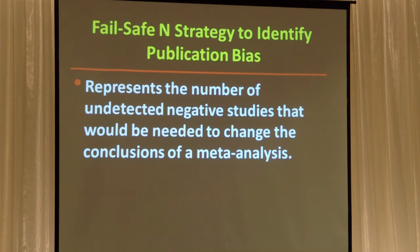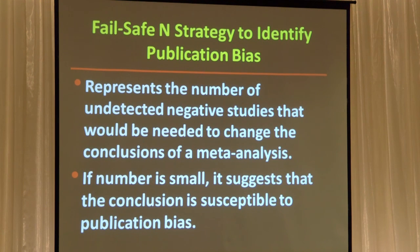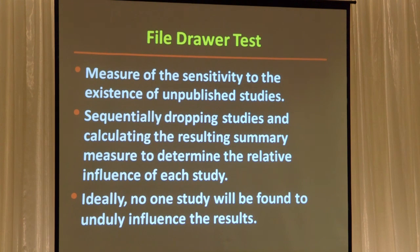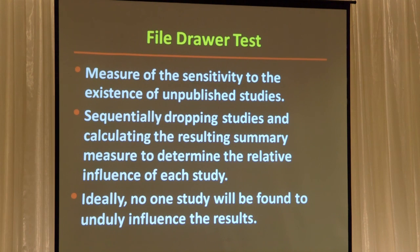There are other strategies with great names. The fail-safe strategy asks: how many undetected negative studies would you have to add into your meta-analysis to change the result? Ideally that number should not be small — if only a small number of trials changes your result, you're concerned about publication bias. Similarly, the file drawer test: you sequentially remove studies from your meta-analysis, and you'd like to find that no one or two studies have a huge impact on the outcome. If they do, your estimate is tenuous.